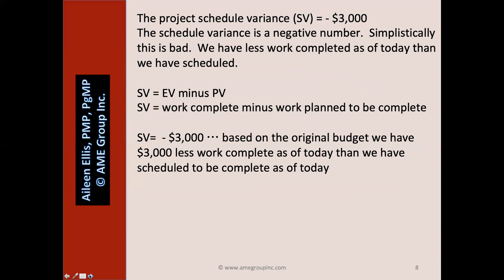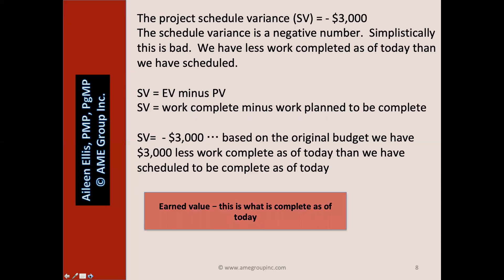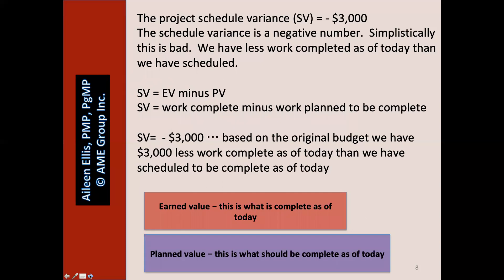This slide again explains in writing the last sample question. If you struggled, go through this slide in detail. The schedule variance is a negative number — simplistically, this is bad. We have less work completed as of today than we have scheduled. The earned value is the measure of what work is complete as of today; the planned value is what should be complete as of today. We have less work complete than we should — our schedule variance is a negative number.